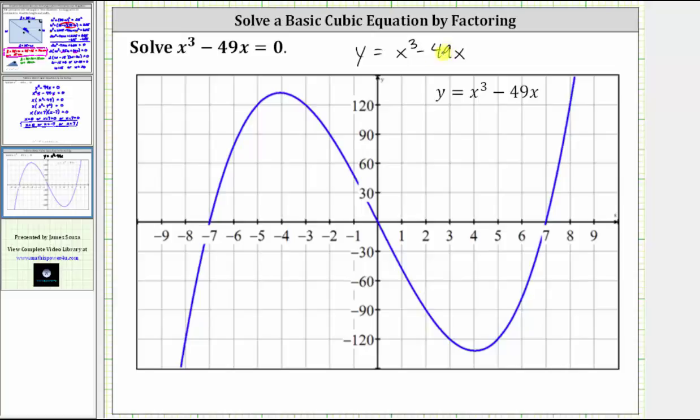Now that we have the graph, we want to find the point on the graph where y is equal to zero. Remember, y is equal to zero anywhere on the horizontal axis, or x-axis, and therefore the solutions will be the x-intercepts, or horizontal intercepts, of the graph.